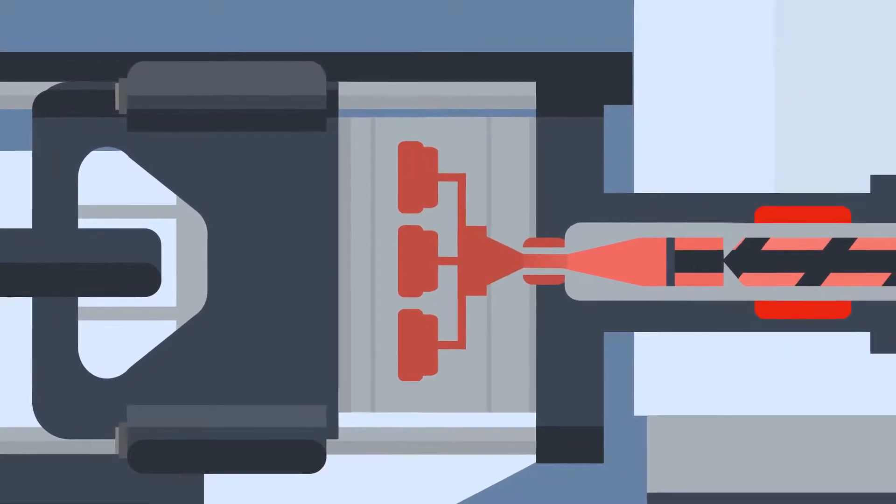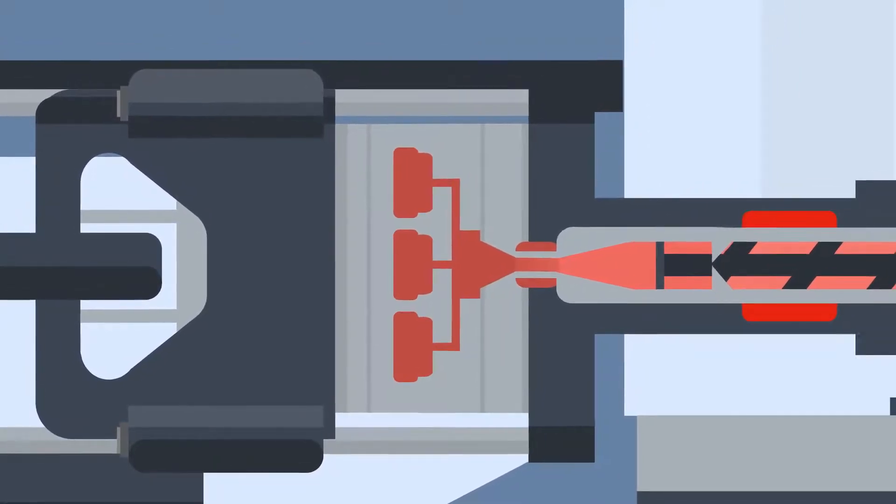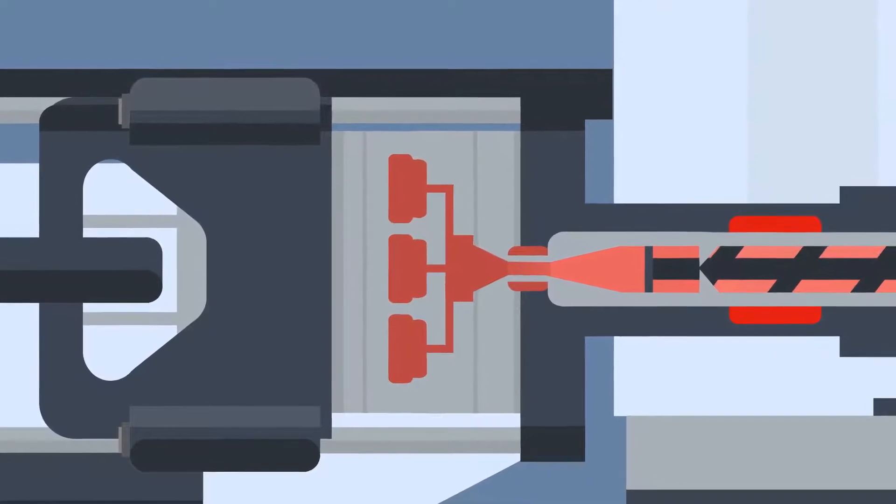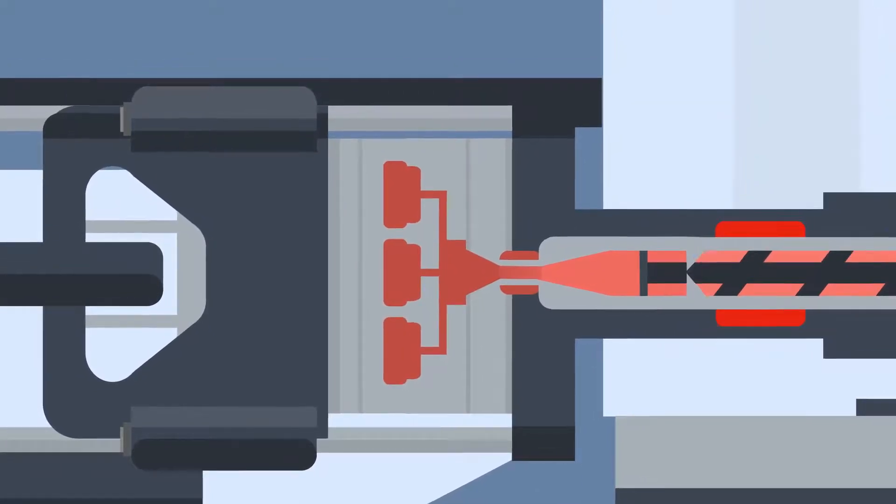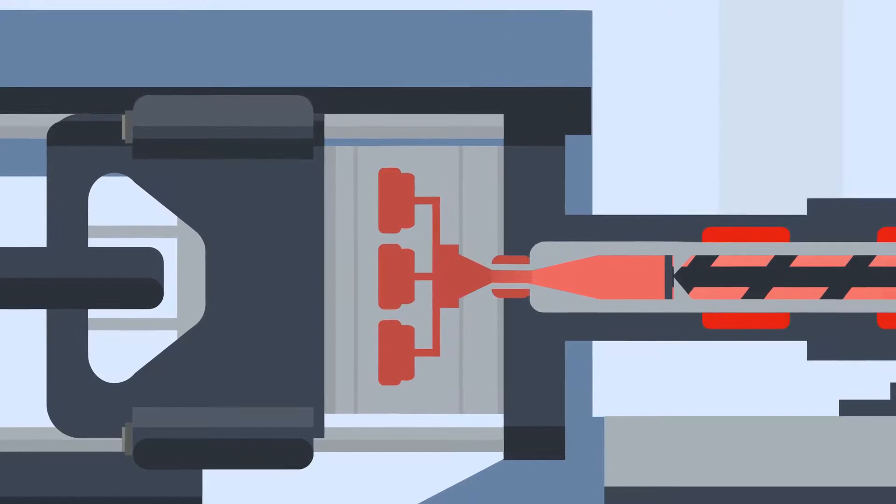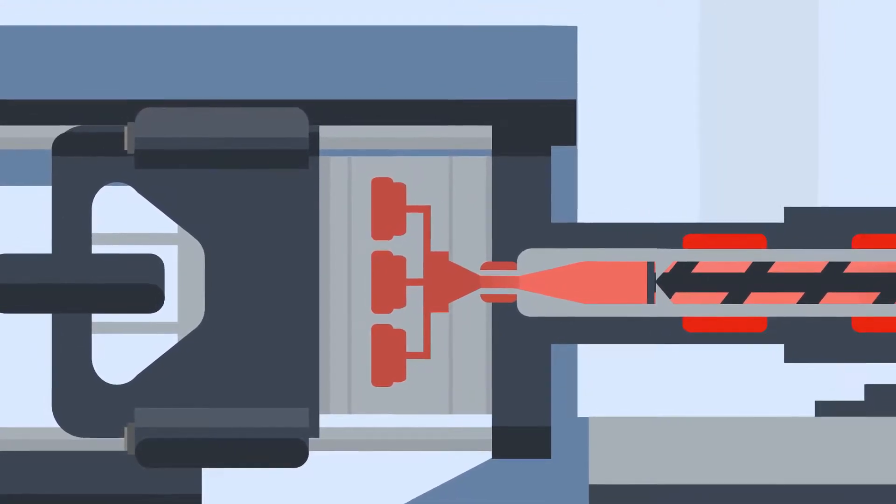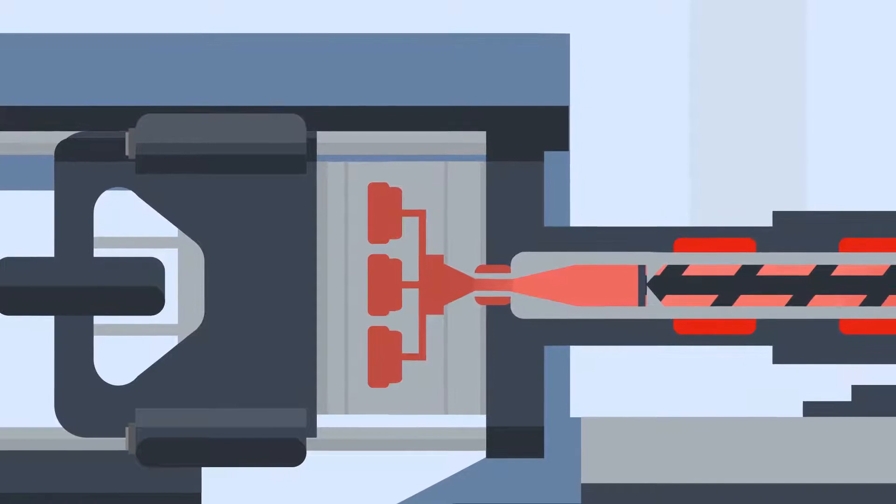When the tool cavity is mostly full of liquid, a holding phase begins, where the part starts to take its final form. After a set holding time, the screw will screw back to its set point. This happens at the same time as the cooling phase of the cycle.